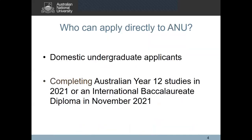So who is eligible to apply directly to ANU? Domestic students which includes Australian or New Zealand citizens, Australian permanent residents, or Australian humanitarian visa holders who are completing an Australian year 12 in any state during 2021, or they're completing an IB diploma in 2021, can apply directly to ANU. If you're a domestic applicant completing any other form of qualification or completing the IB diploma in the May session, you would have to apply through UAC.